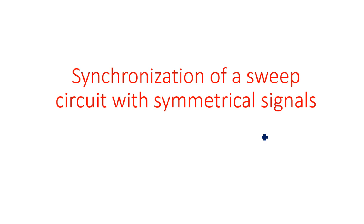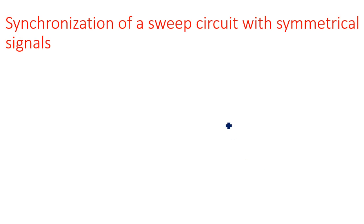In this video I am going to explain about the synchronization of a sweep circuit with a symmetrical signal. In the previous video we saw how the sweep circuit is synchronized with a pulse waveform. We considered a UJT relaxation oscillator as an example — any relaxation oscillator, multivibrator, or sweep circuit can be considered. That UJT relaxation oscillator is applied with a pulse waveform.